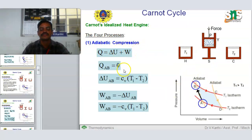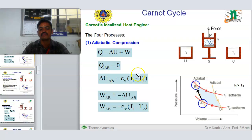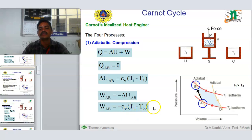For adiabatic compression, the formula involves ΔU plus W. The heat supplied Q equals 0. ΔU_AB equals Cv (constant volume) times (T1 minus T2). Work done W_AB equals minus the change in internal energy, so W equals minus Cv times (T1 minus T2).